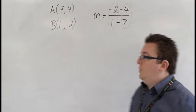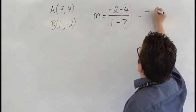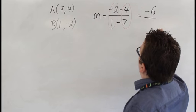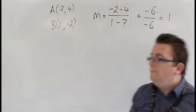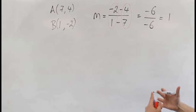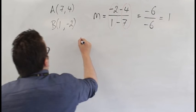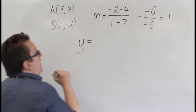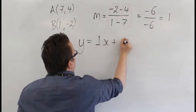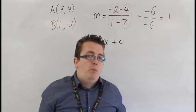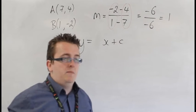So, anyway, backtracking a bit, we have minus 2, take away 4, is minus 6, and 1, take away 7, is also minus 6, so the gradient is just 1. So, with the gradient being 1, we can then say the equation of the line is y equals 1x plus c. But, we're not going to bother putting in the 1, so we're just going to write it as y equals x plus c at the moment.